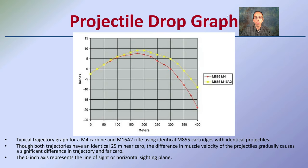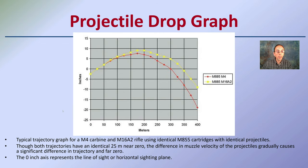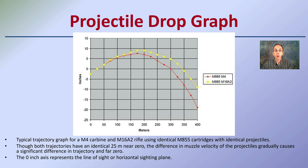The projectile drop graph puts a visual to that. Here's a typical trajectory graph for an M4 carbine rifle using cartridges, and we can see two different ones utilized. They're all fired at the same point and the same angle, but we can see varying differences. Both trajectories are identical at 25 meters, and the difference in muzzle velocity of the projectiles gradually causes significant changes. Knowing the caliber and the propellant used can help offer suggestions as to how far it may travel. Over short distances the change may not be as great, but over long distances that change will definitely be seen to a much greater degree.